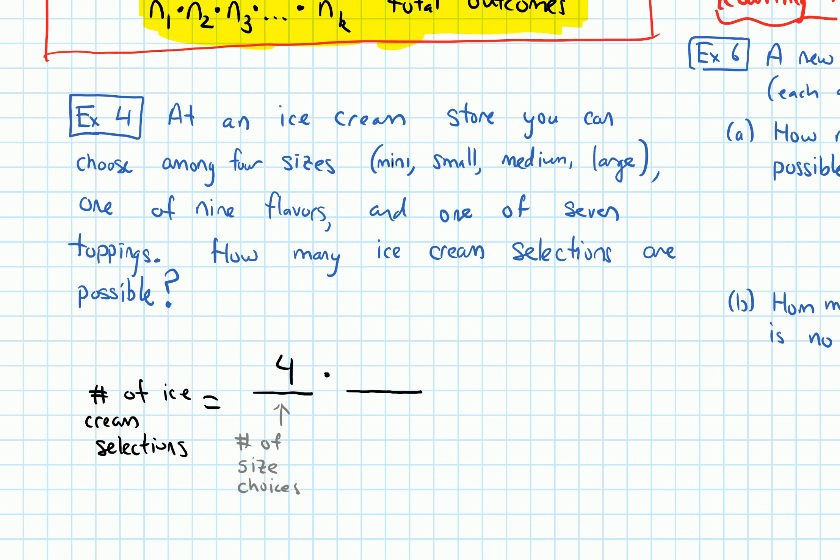At the next stage, we're going to pick a flavor. So now we need to count the number of possible flavor outcomes, the number of flavor choices. And there are nine choices for flavors. And notice I'm starting the multiplication principle here.